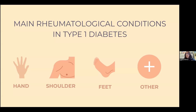We will discuss the different rheumatological conditions by site of joint — the hand, the shoulder, the feet, and other sites that can be involved in rheumatic conditions associated with type 1 diabetes.